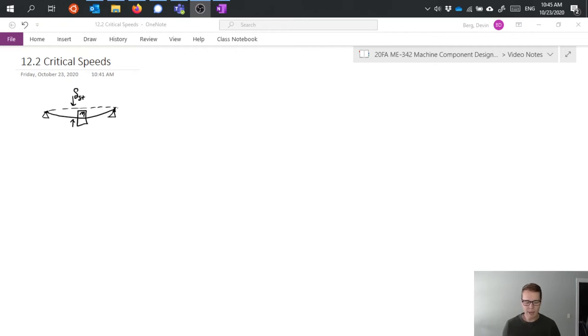So the first example here is just a simple shaft with a single point load mounted to it and the single point load represented here as a mass is causing a deflection delta st in that shaft and we're neglecting the mass of the shaft itself here and just assuming that the mass of whatever is mounted to it is much larger.